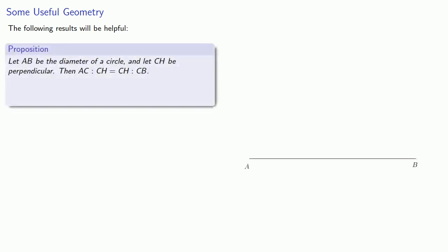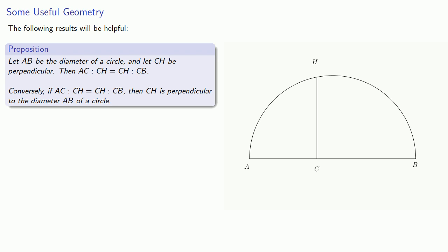In order to do that it helps to have some useful geometry about the conic sections and circles. So let AB be the diameter of a circle and CH be perpendicular. Then AC is to CH as CH is to CB. And conversely, if AC is to CH as CH is to CB, then CH is perpendicular to the diameter AB of a circle.